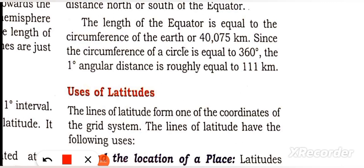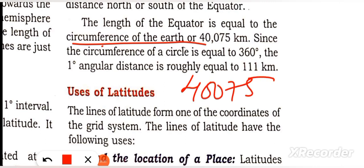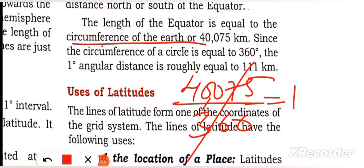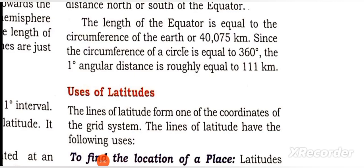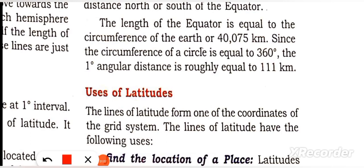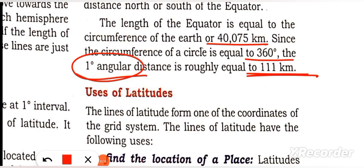The total of a circle is 360 degrees. If we divide the circumference of 40,075 km by 360 degrees, we get roughly 111 km per degree. So the distance between each degree of latitude is approximately 111 km.